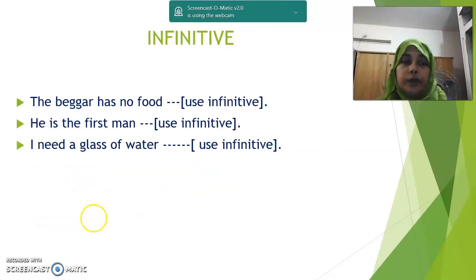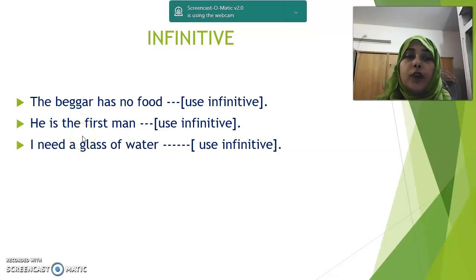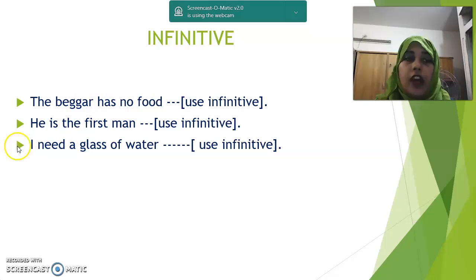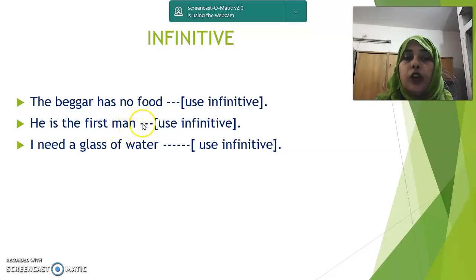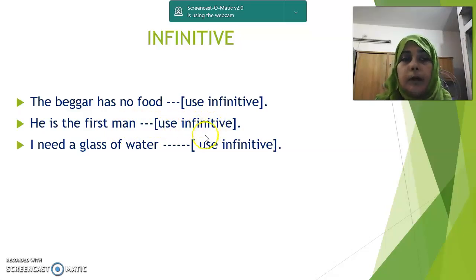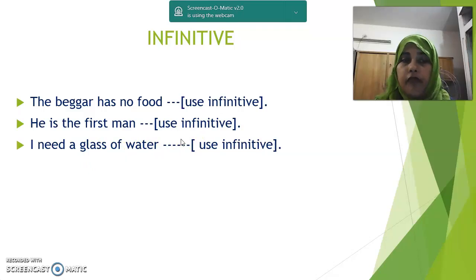Number one: infinitive. What is infinitive? Infinitive is 'to' plus the base form of a verb. Examples: 'The beggar has no food to eat.' 'He is the first man to sing' or 'He is the first man to protest.' 'I need a glass of water to drink' — here, 'to drink' is an infinitive.